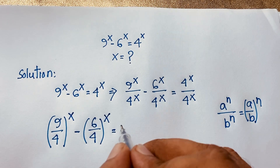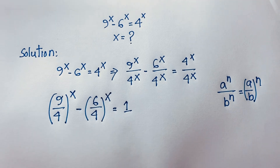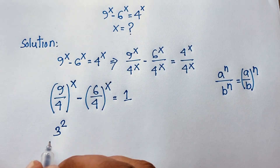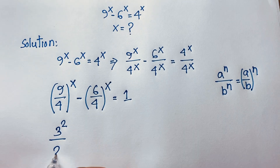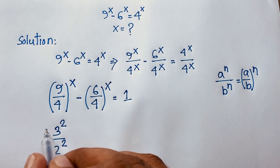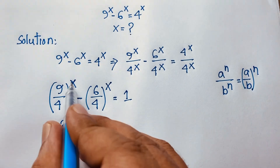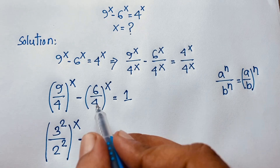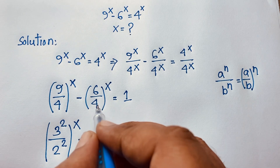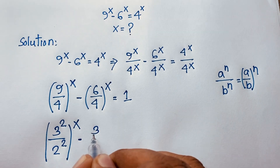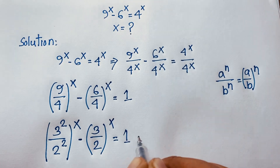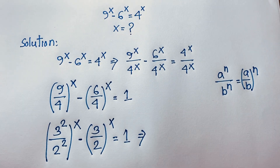Now 9 is 3 squared and 4 is 2 squared, so (9/4) to the power x becomes (3²/2²) to the power x. Also, 6/4 simplifies by dividing numerator and denominator by 2, giving 3/2. So we have (3²/2²) to the power x minus (3/2) to the power x equals 1.